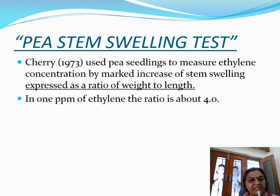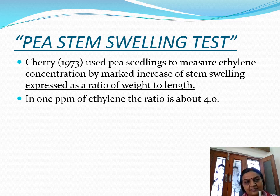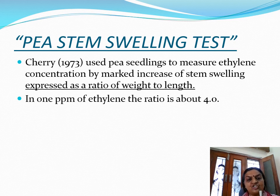Next is the pea-stem swelling test. This was basically designed by Cherry in 1973, and he used pea seedlings to measure ethylene concentration. Under the impact of ethylene, stem swelling is observed, and this swelling can be expressed in the form of a ratio of weight to length — that is, the stem weight divided by its length. In general, for one ppm of ethylene, this ratio of weight to length is about four.